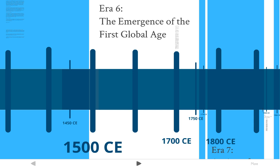Then in Era 6, from about 1500 CE to around the 1700s, we will be looking at the emergence of the first global age. That starts around the time when Columbus travels to North America and covers all of the interactions that happened there, up to around the early 1800s.